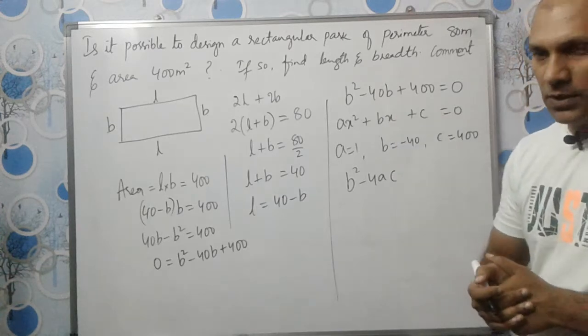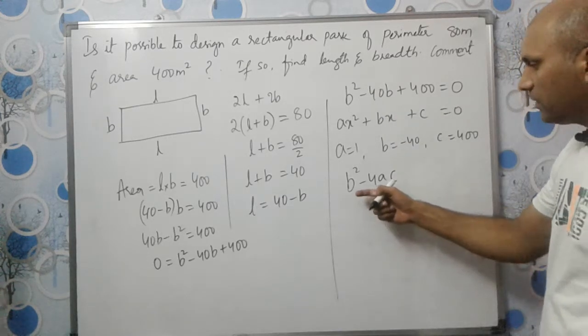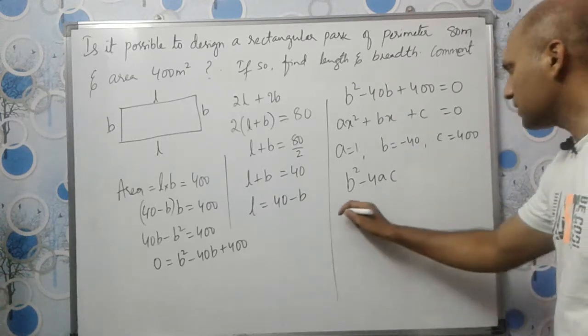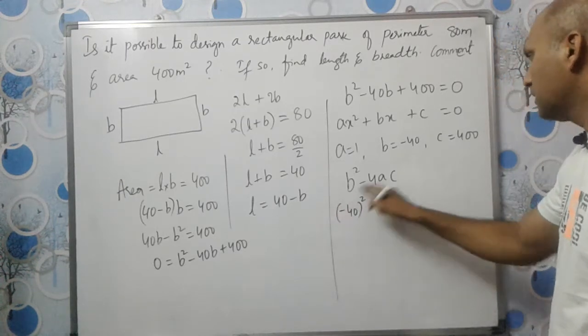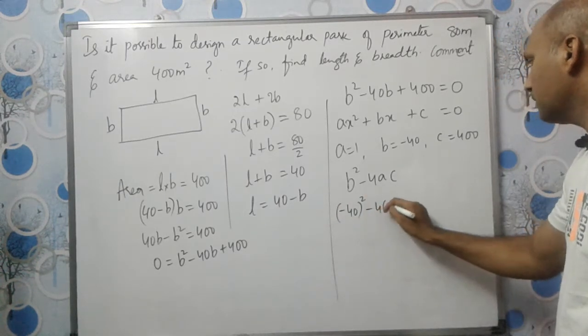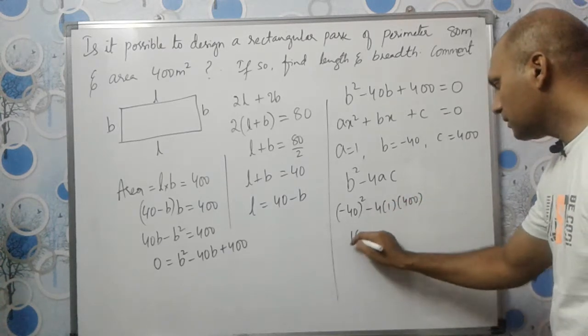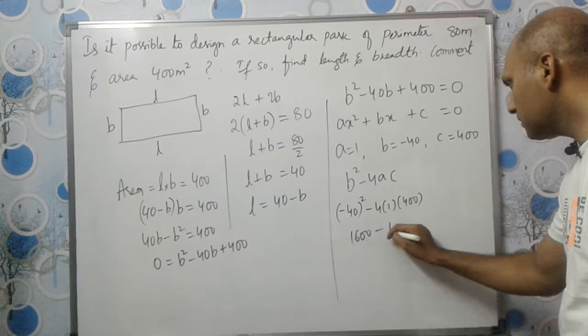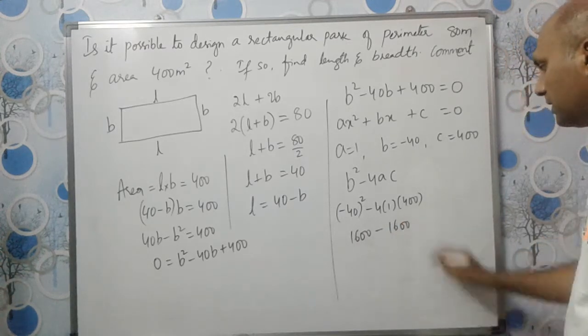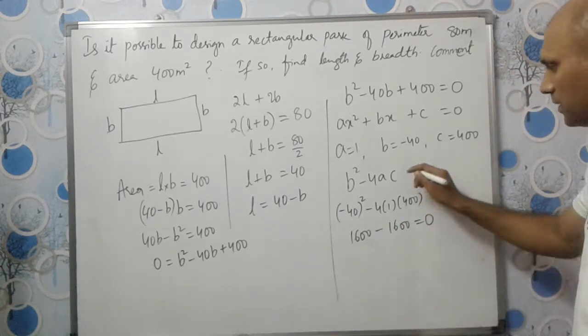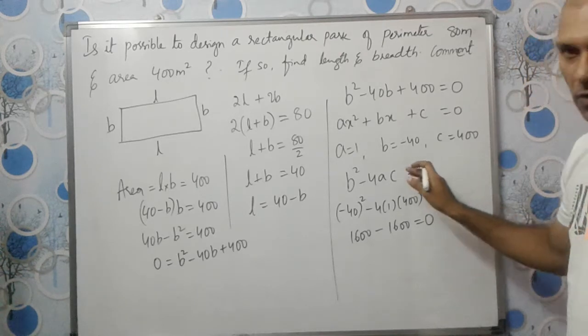Let us find this value B²-4AC. We have (-40)²-4×1×400, which is 1600-1600, so this gives us 0. So B²-4AC equals 0.